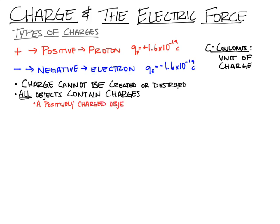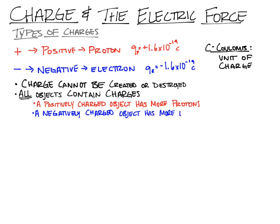A positively charged object means you have more protons than electrons. A negatively charged object has more electrons than protons. A neutral object has an equal number of protons and electrons. To charge an object means that we are removing some charge from that object or adding charge to that object — we're not creating charge, we're just redistributing it.